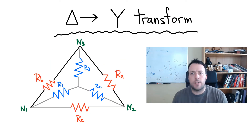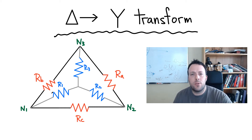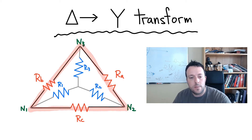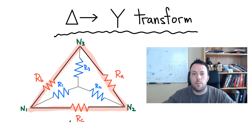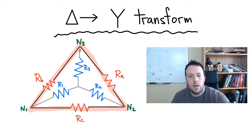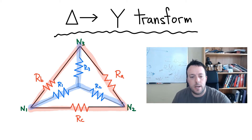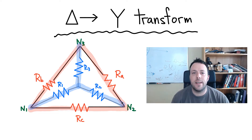If you've never seen the delta-to-Y transform, here it is. I have six resistors, but they're really grouped in two different groups. A delta network looks like everything on the outside here — three nodes connected by three resistors. We have RA, RB, and RC connecting in a triangular form, and that looks like the Greek letter delta. The Y network, on the other hand, has three different resistors connecting those various nodes. It looks like a Y, except in this case it's upside down — if you rotate it by 180 degrees, it looks like a Y.